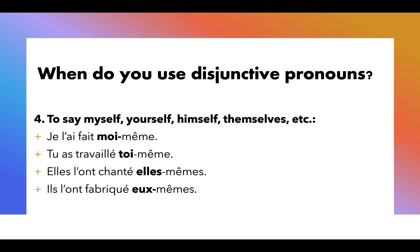The fourth time we use a disjunctive pronoun is when we're saying myself, yourself, or himself. Like, I did it myself — je l'ai fait moi-même. Tu as travaillé toi-même — you worked by yourself. Elles l'ont chanté elles-mêmes — they sang it themselves. Ils l'ont fabriqué eux-mêmes — they made it themselves. Fabriqué, by the way, means to make, to create. It's a great verb — fabriqué. It's like fabricate, except fabricate has negative connotations in English and sort of means to make something up, whereas in French it just means to make, create, or build.